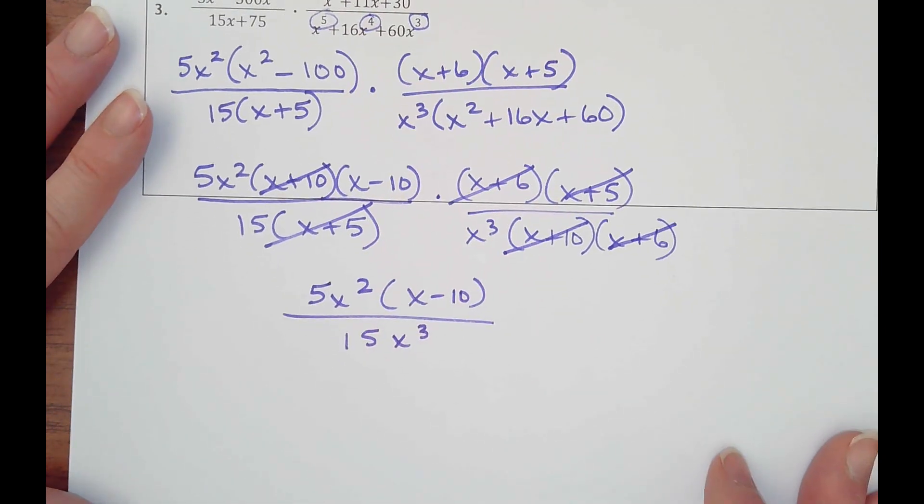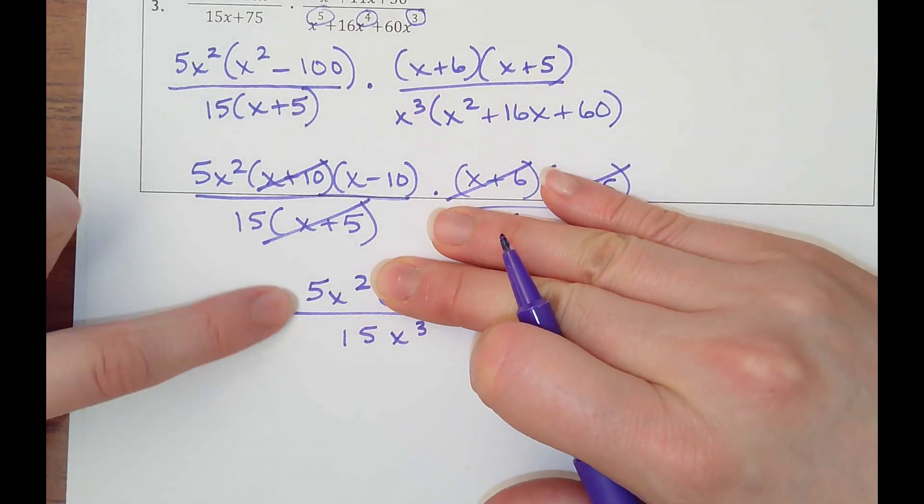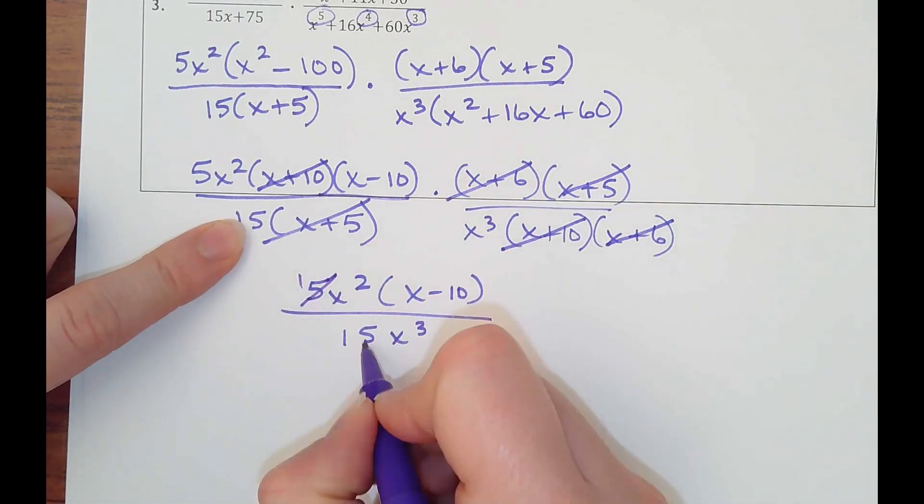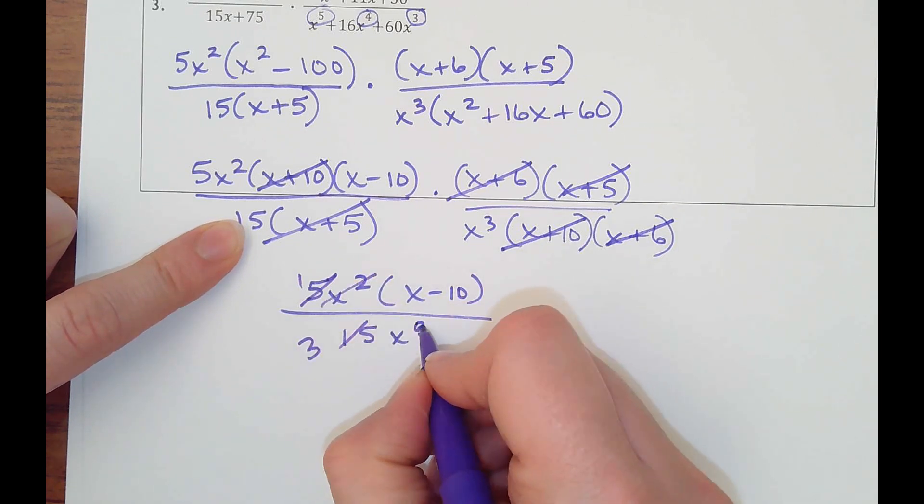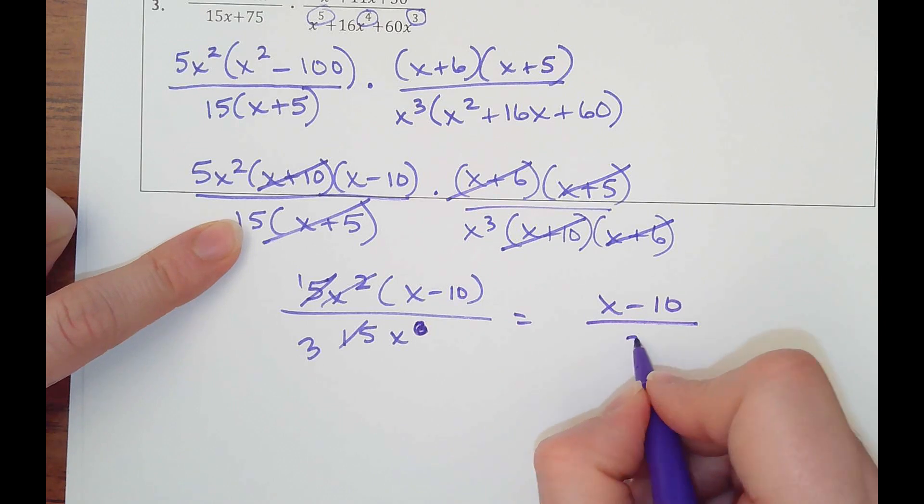So I have this. This 5x squared is called a monomial. We can simplify this. 5 fifteenths would be a third. And then take out an x squared. So you have x minus 10 over 3x.